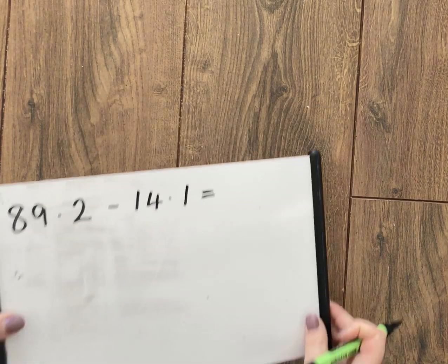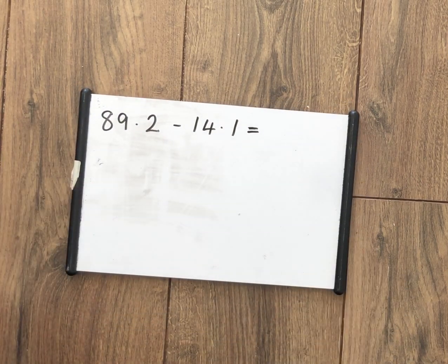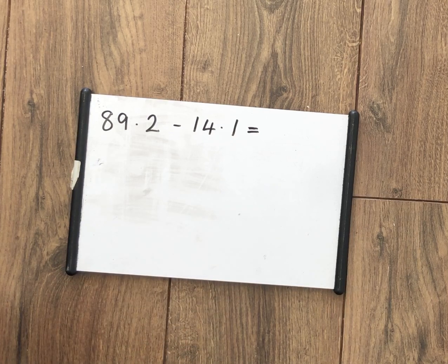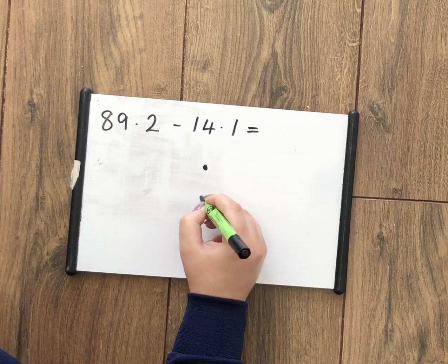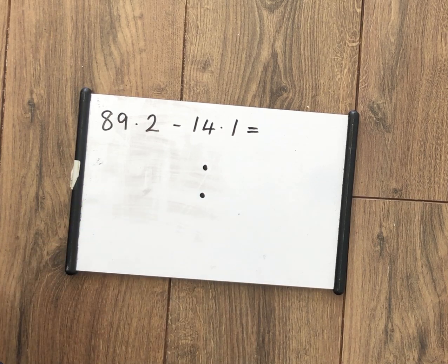We're just going to show you one more that involves decimal numbers. Remember, with decimal numbers, always start with lining up that decimal point. So I know I've got two decimal points. These are really good for money questions.